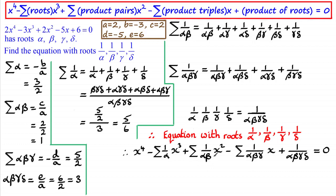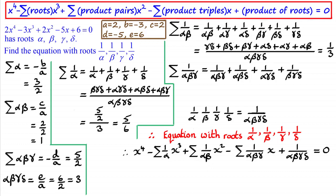Next, sigma(1/αβ) — the sum of the product pairs of our new roots. Again putting this over the lowest common multiple, alpha·beta·gamma·delta, the numerator turns out to be the sum of the product pairs of the original roots, which has a value of 1, and the denominator is 3. So this gives 1/3 — the coefficient for x squared.